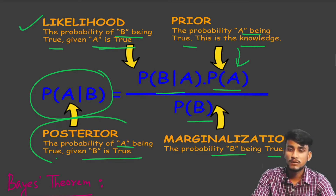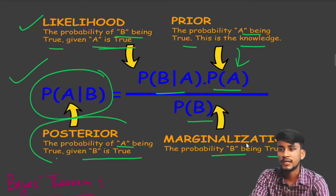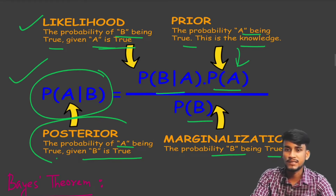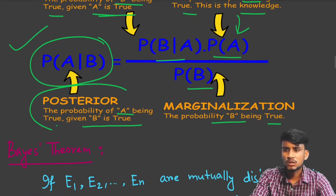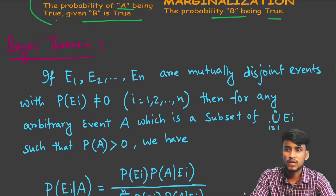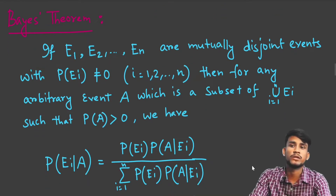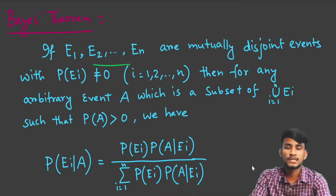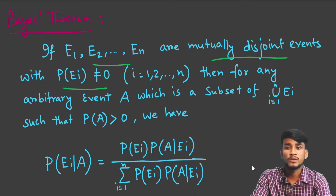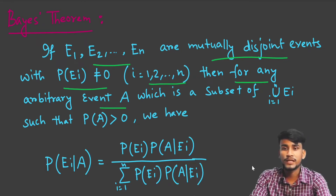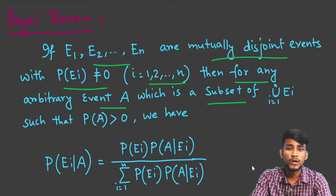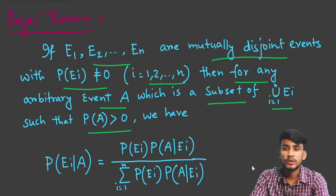This completes the mechanism of Bayes' theorem for a single-event case with events A and B. Now let us come to the statement of Bayes' theorem for the general case. If E1, E2, ..., EN are mutually disjoint events with P(Ei) ≠ 0 for i = 1 to N, then for any arbitrary event A which is a subset of the union of Ei (i = 1 to N) such that P(A) > 0, we have the following.